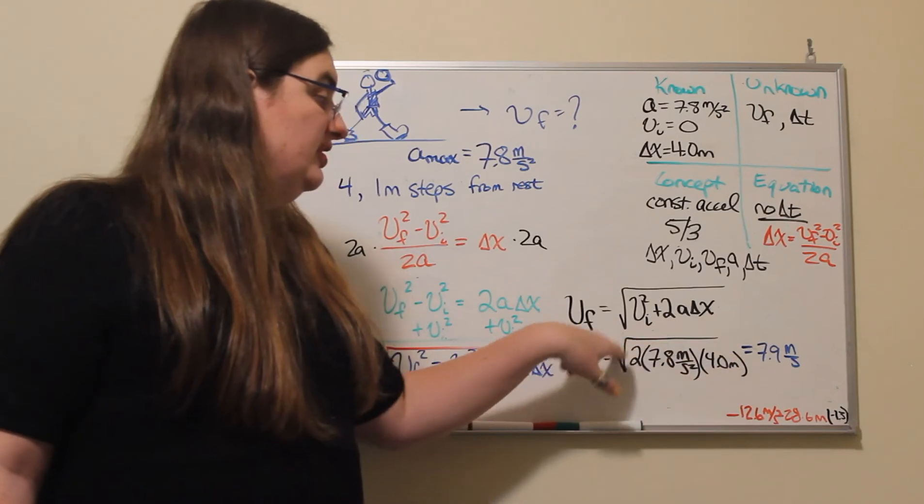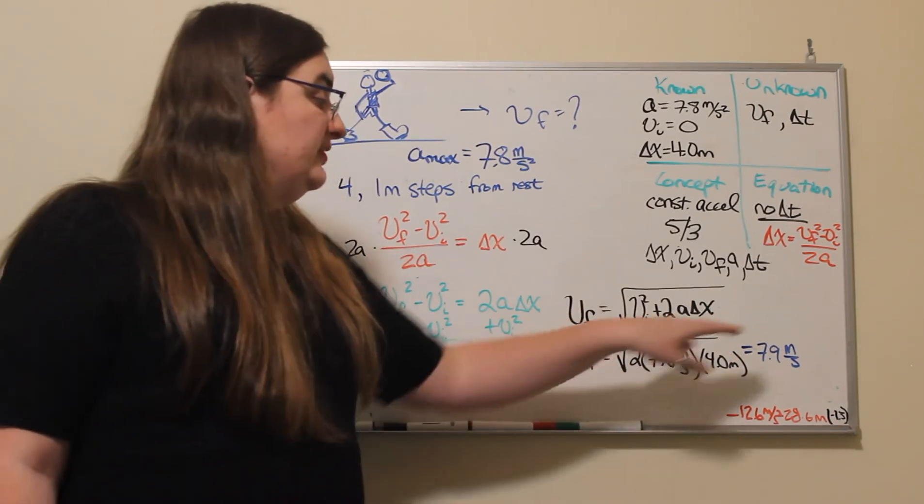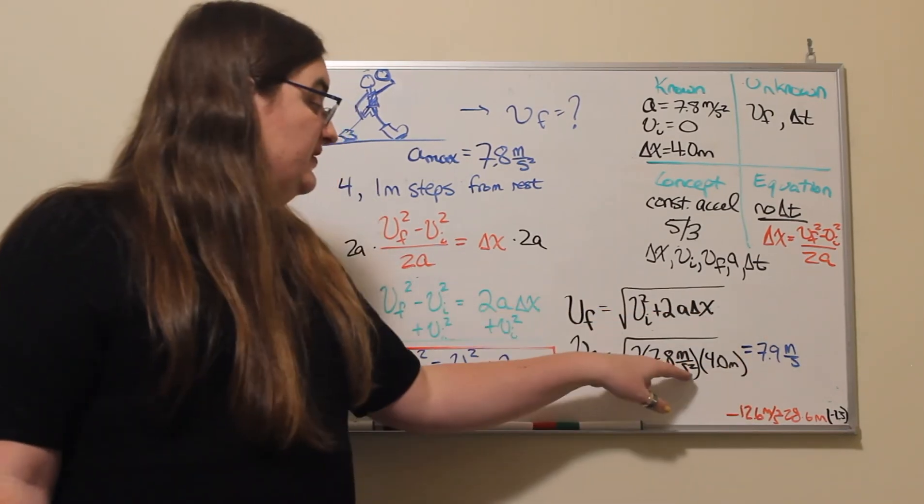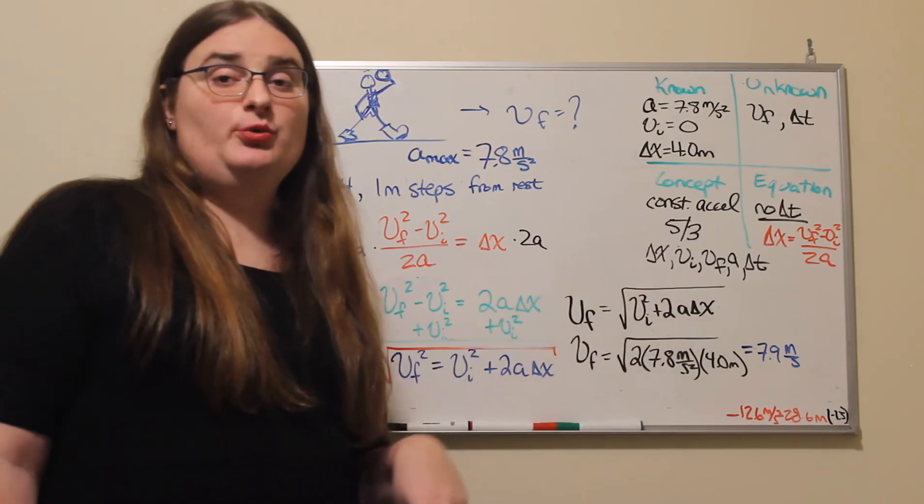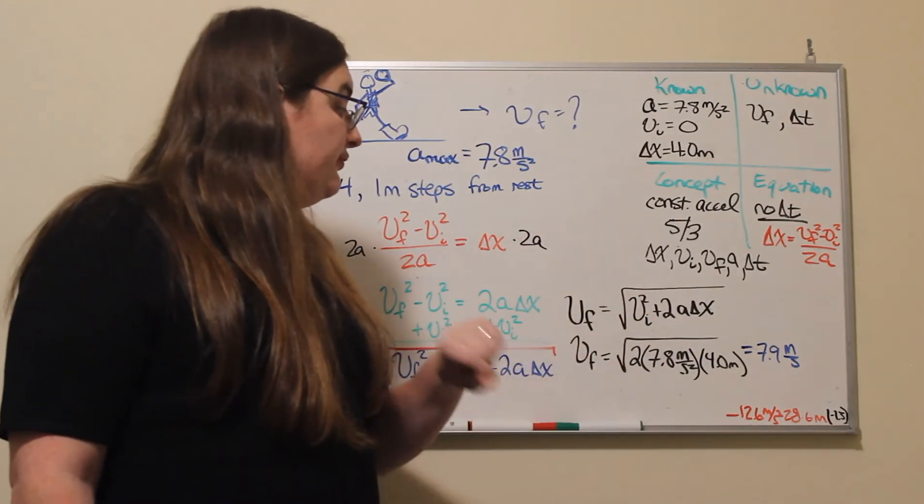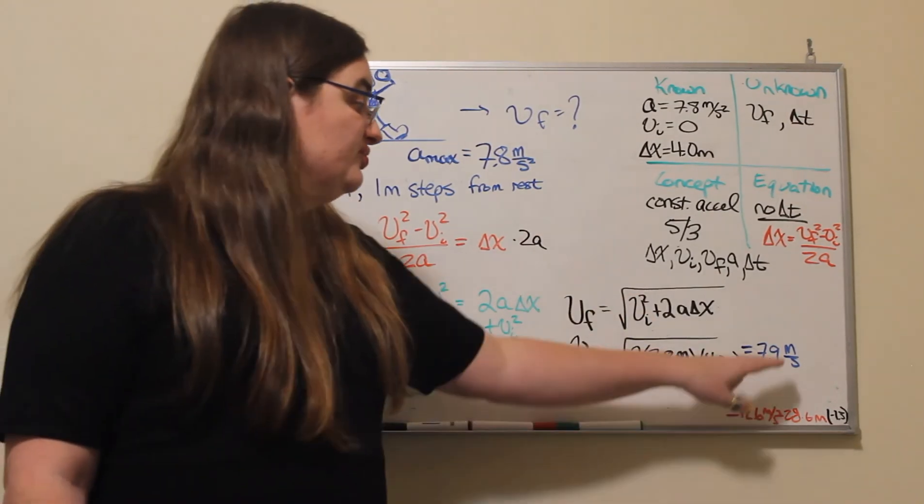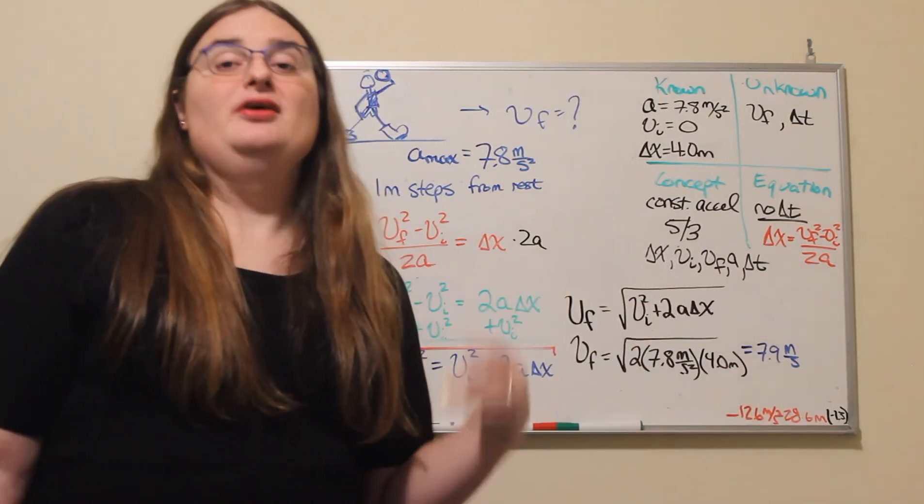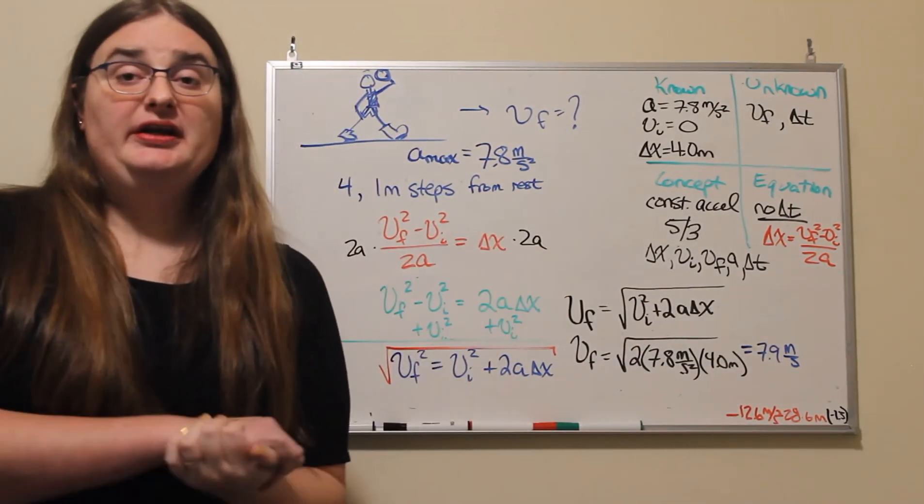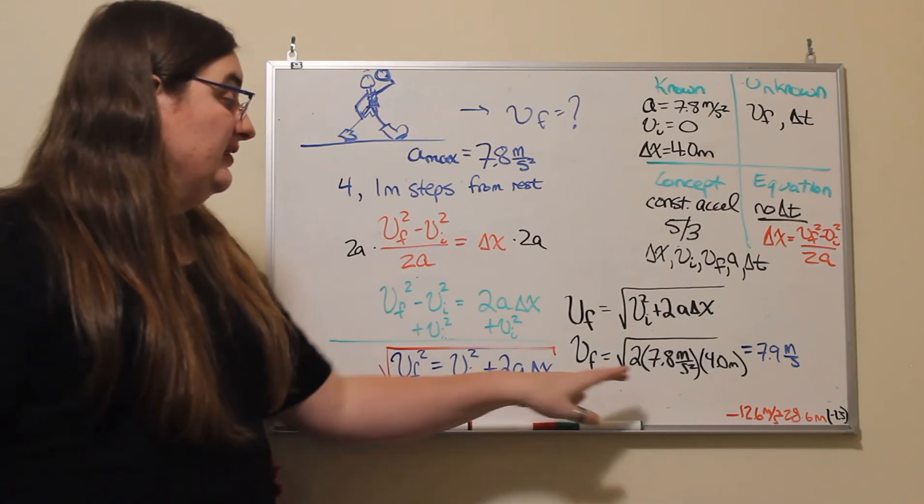So I have meters times meters under the square root. So that would give me meters squared divided by seconds squared under the square root. The square root of seconds squared is seconds. So I have meters per second, which is a very happy unit of velocity.